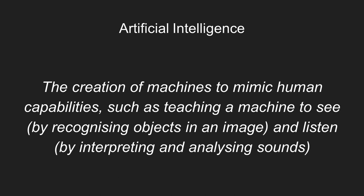Artificial intelligence is the creation of machines to mimic human capabilities, such as teaching a machine to see by recognising objects in an image, and to listen, interpreting and analysing sounds. Artificial intelligence is a broad term that covers a range of specialisations and subsets, such as computer vision and natural language processing.